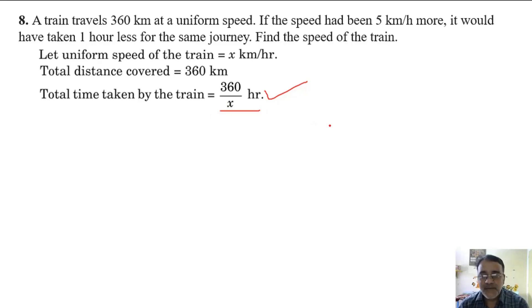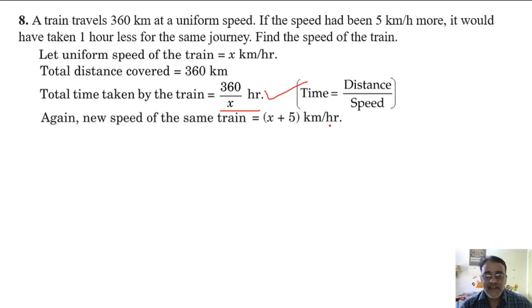Now speed has been increased. The new speed will be x + 5 km per hour. So what will be the new time? 360 upon x + 5.